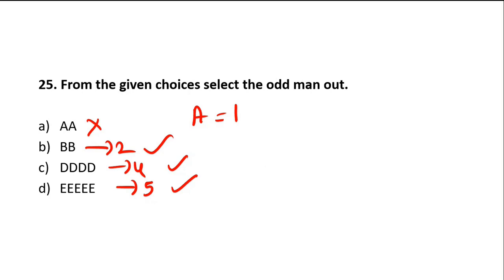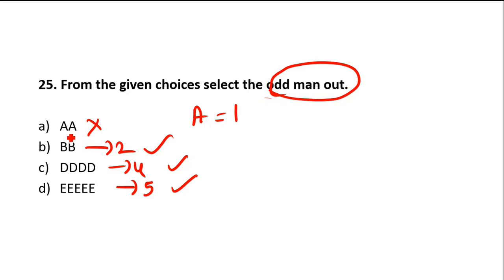Simple question. Alphabetically: A is 1, B is 2, D is 4, E is 5. The odd man out — same process as before. E is 5, given 5 times. D is 4, given 4 times. B is 2, given 2 times. A is 1 alphabetically, so it should appear only 1 time. But A is given 2 times. So the odd man out is Option A.